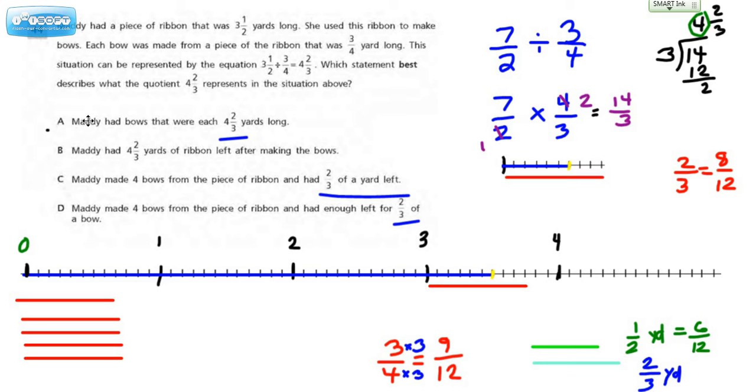Choice A: Maddie had bows that were each 4⅔ yards long. Well, this is what one bow is. That's ¾. How can one bow be longer than the amount of ribbon that we have? That just doesn't make any sense. Let's cross that one off. Not a contender.